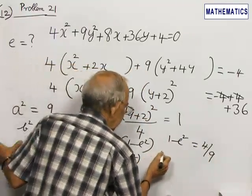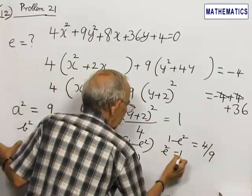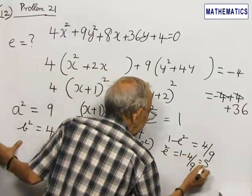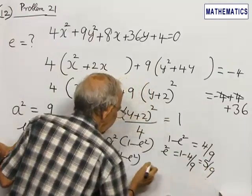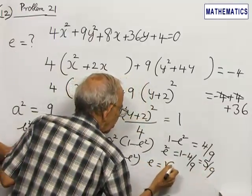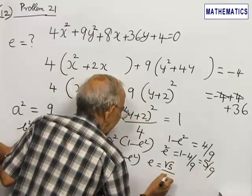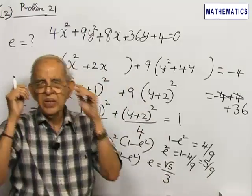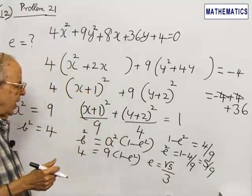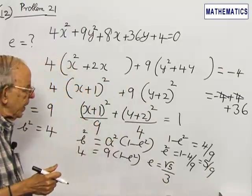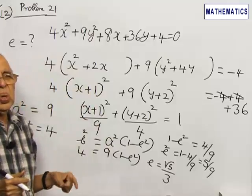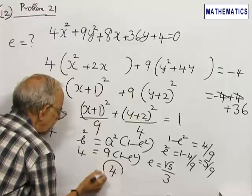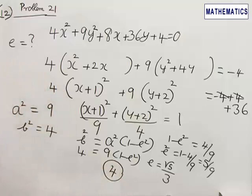Transposing e², we get e² = 1 - 4/9 = 5/9. Taking square root, e = √5/3. So the eccentricity of the given ellipse is √5/3. So choice 4 is the correct answer.